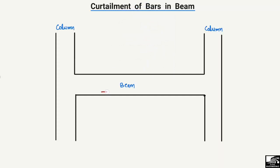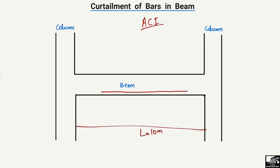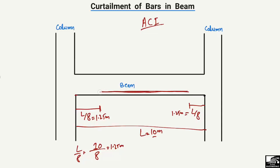According to ACI standards, we provide bars only in certain regions. If the total length of the beam L is 10 meters, the bottom bars should be cut at L/8 from both edges. L divided by 8 equals 1.25 meters, so at 1.25 meters from each end, the bottom bars are cut and only provided in the middle region.